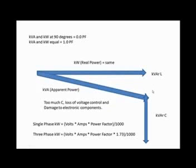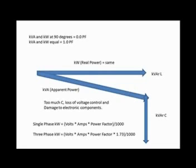What happens is you end up with way too much capacitance in the circuit. Your power factor changes to KVAR capacitive. And what ends up happening with KVAR capacitive is that you lose voltage control and you begin damaging the electronics in your home — meaning you'll start to see TVs, stereos, computers, all that stuff begin to fail.